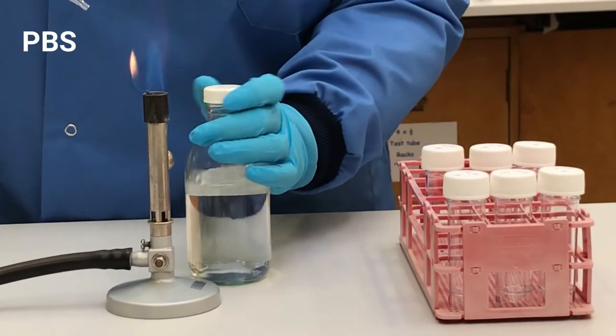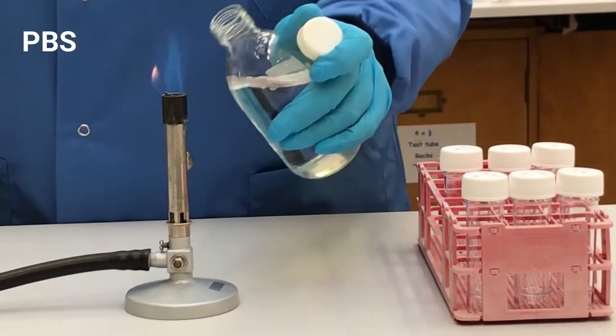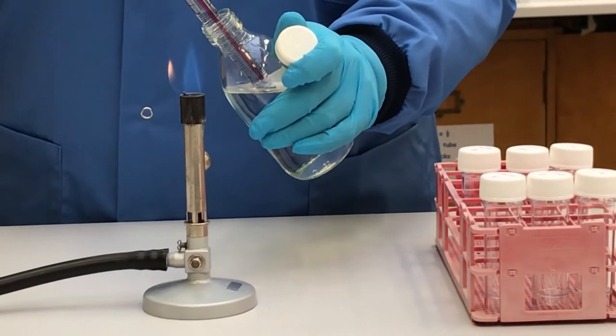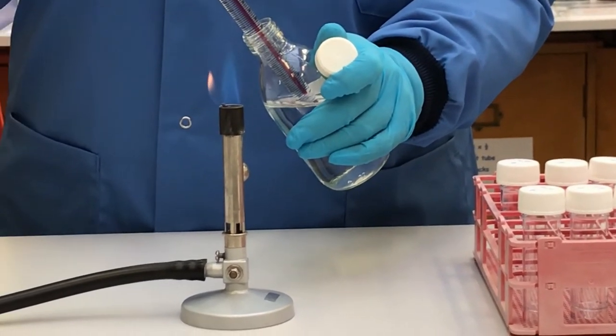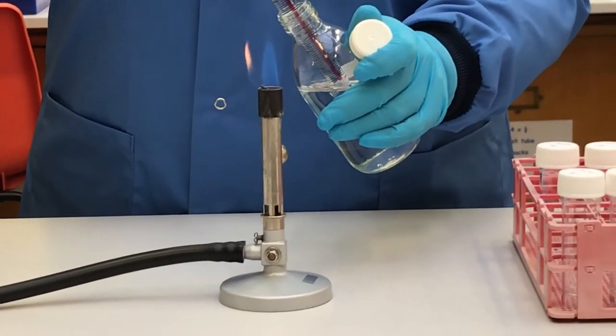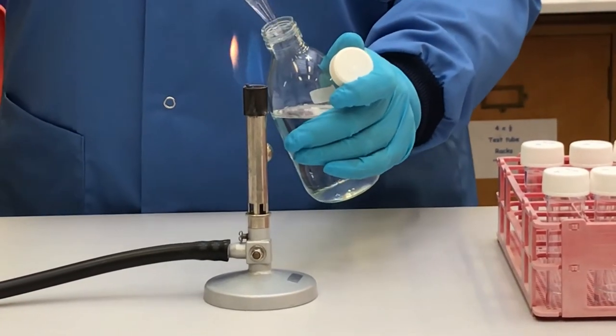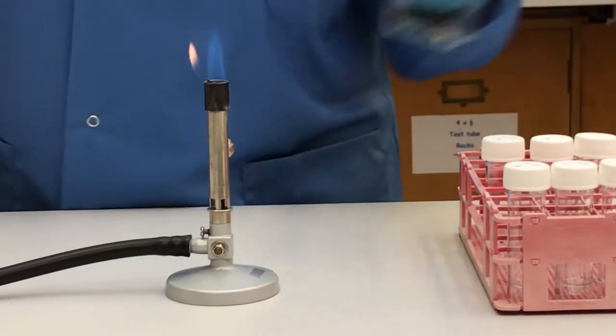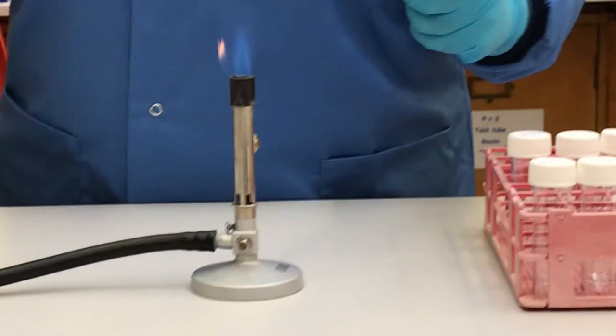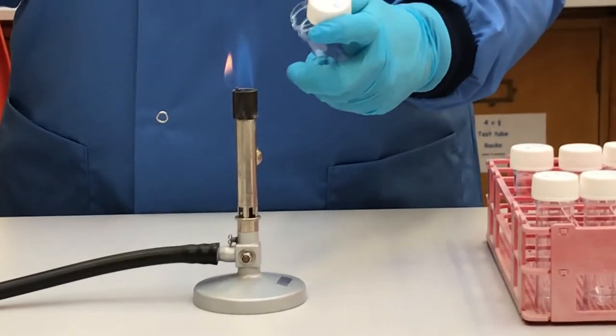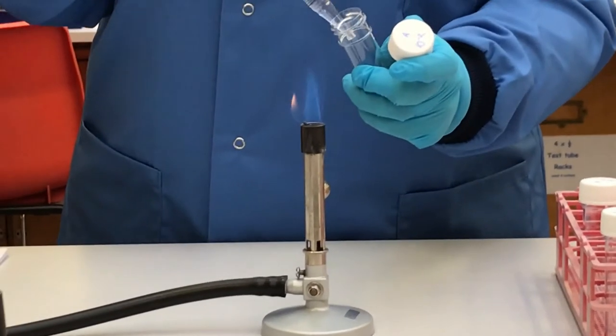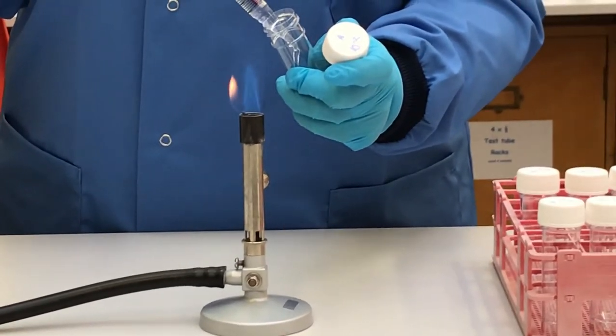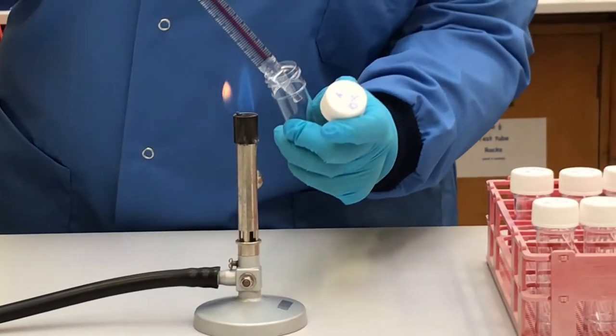Next, you will perform three serial tenfold dilutions for Sample A. To do this, add 9 ml of PBS to three universals. These should be labeled 10 to the minus 2, 10 to the minus 3, and 10 to the minus 4. Remember to use aseptic technique throughout.